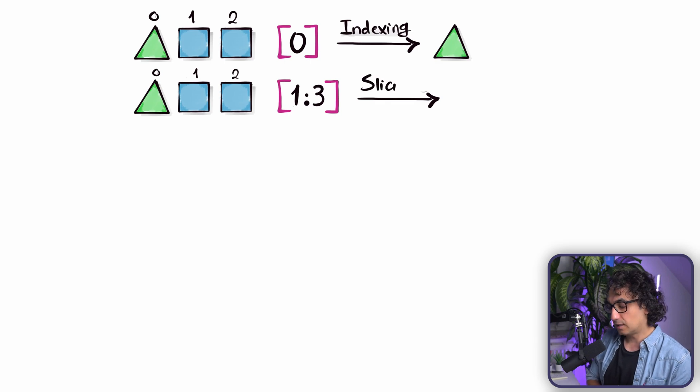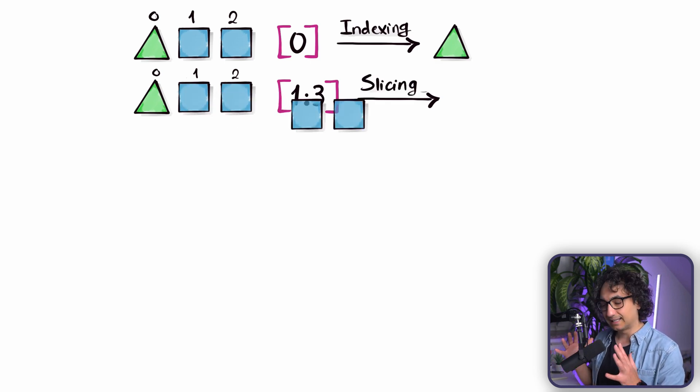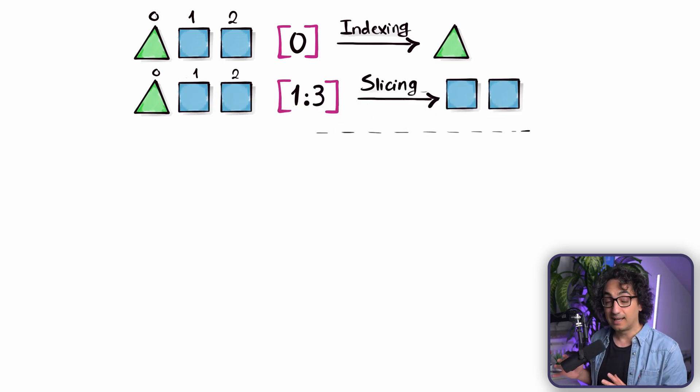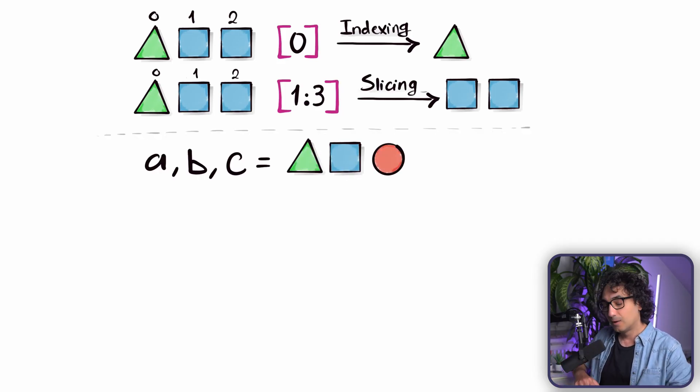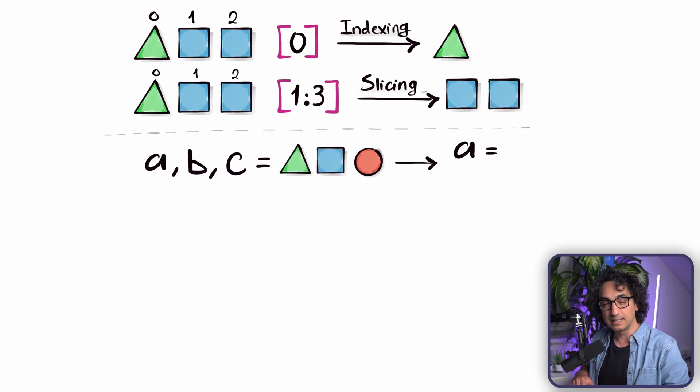But if you want to get multiple items, we have to use something called slicing. If you specify the start and the end, you can cut exactly how much you need. Another thing that we can do to our list is to unpack it. That means we're going to split all the items into multiple values, so in one line, in one go, you are assigning multiple variables to the values of your list.